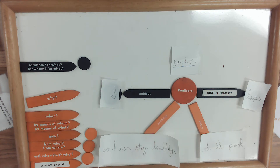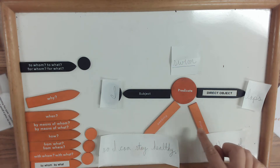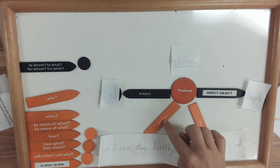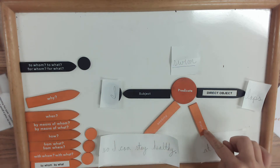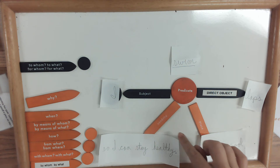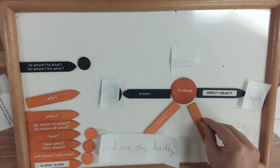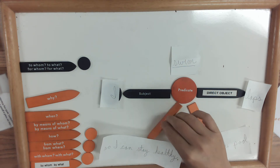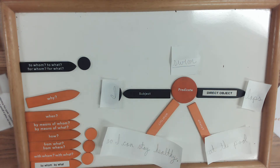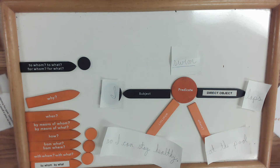When you draw this you have a lot more to draw. Your orange arrows at home right now do not have the word on the back — you only have the questions. That's completely fine for now, so you would just write the questions on your paper.